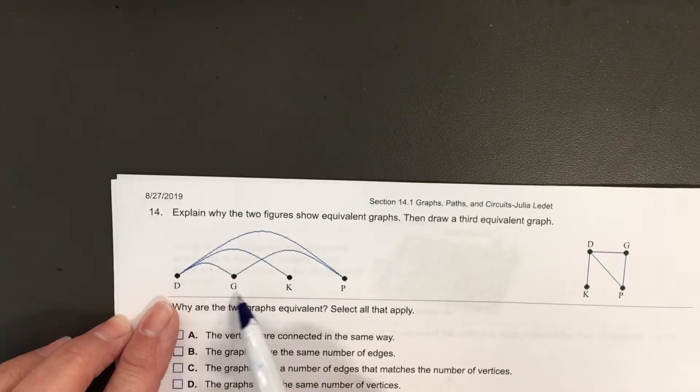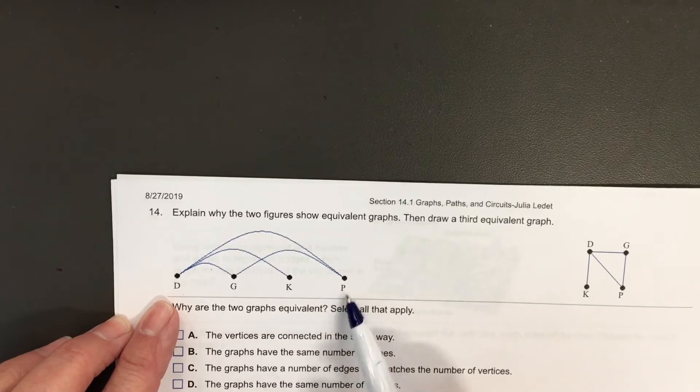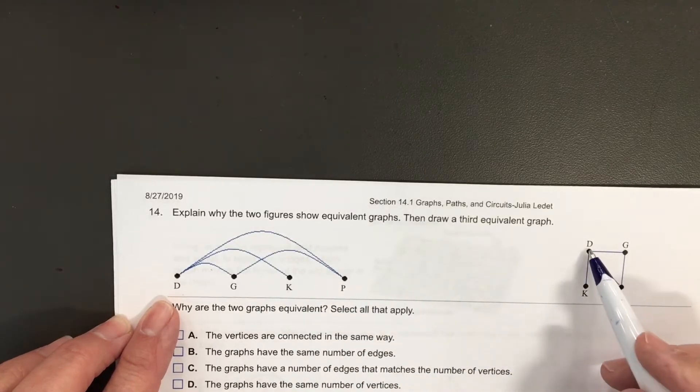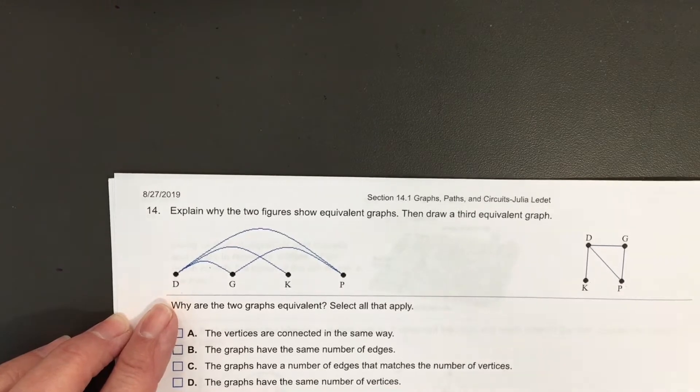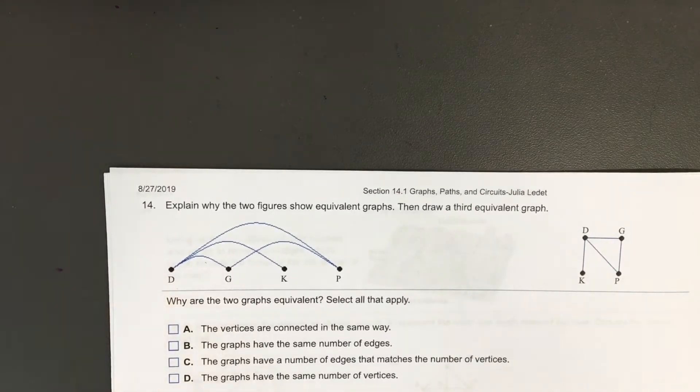On the first one, I have D, G, K, P. On the second one, D, G, K, P. Same vertices, we're good. Are they connected in the same way?